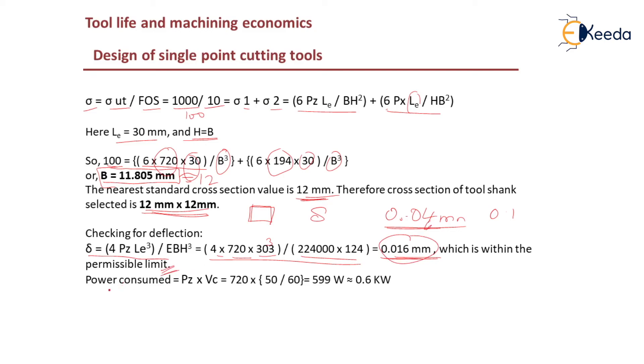The value we have got is less than this value so it is within the permissible limit. The power consumed is given by force times velocity. If you substitute Pz times cutting velocity, 720 times 50 divided by 60, that equals 0.6 kilowatts. This is the power consumption, the deflection, and the dimension of the cutting tool. This is about how to design a single point cutting tool. Thank you.